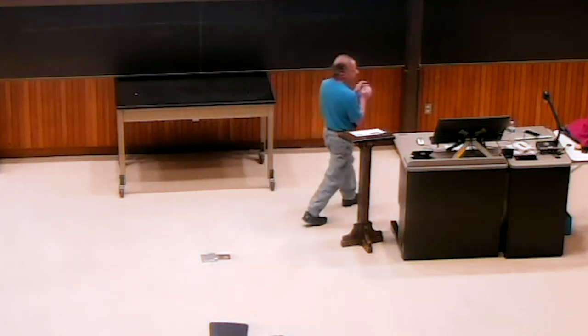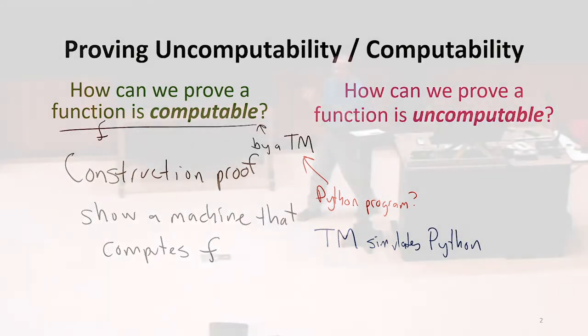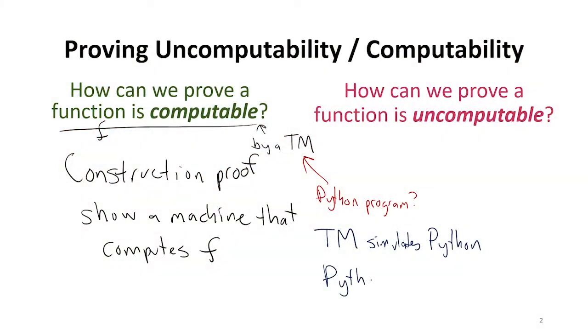So if we can write a Python program and we can show that there is a Turing machine that simulates Python, so once we've shown that there's a Turing machine that can simulate Python, then anything that we can do in Python, we can also do with a Turing machine, because we can simulate Python with that Turing machine. If we wanted to show the opposite, we'd have to show writing a Python program that simulates a Turing machine. That would mean anything that we can do with a Turing machine, we can also do with Python.